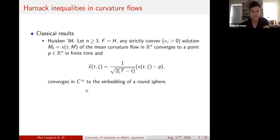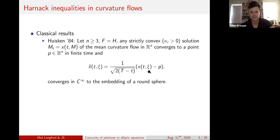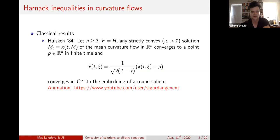Huisken's result says the following: if you have a hypersurface in three-dimensional Euclidean space flowing by mean curvature with a strict convexity condition — meaning all principal curvatures are positive — then this flow converges to a point in finite time. If you zoom into that point by rescaling, putting the point at the origin and blowing up the embedding vector by the remaining time, this rescaled hypersurface converges to a round sphere in a smooth topology.